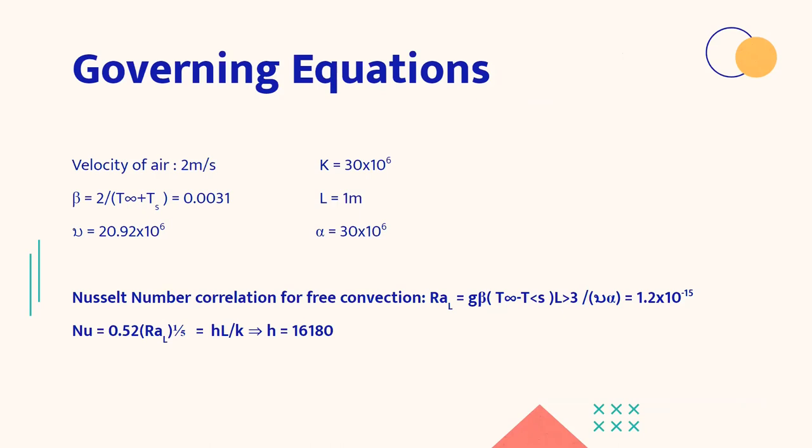So now we'll be treating all of this mathematically and we'll be using heat transfer equations. Firstly, we have taken the velocity of air to be 2 meters per second. The value of k is 30x10^7 and we have defined the following quantities. We have found the value of beta, as we are taking free convection here. In the Nusselt correlation, we'll be using Nusselt correlation in place of Reynolds number correlation, so we need to find a value of beta. So beta is 1 by T, and as we are taking the film temperature, our T becomes T infinity plus Ts by 2.